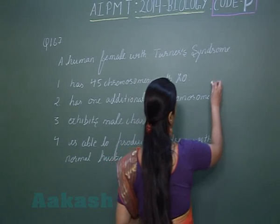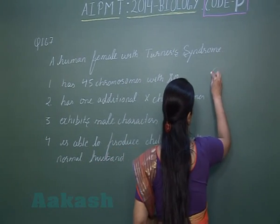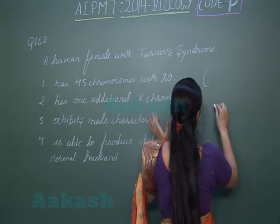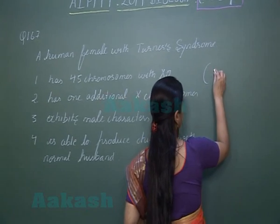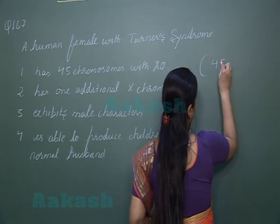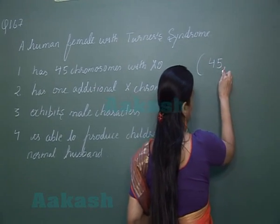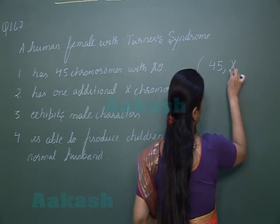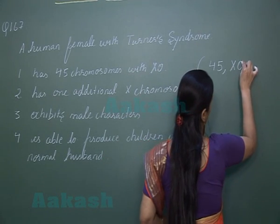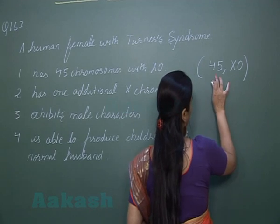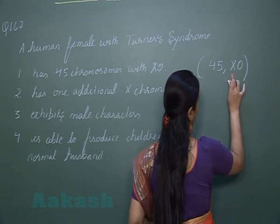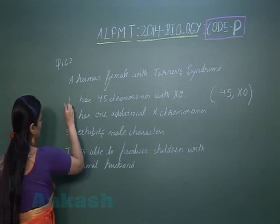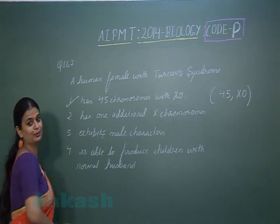The chromosome complement of a Turner syndrome female is written as 45,X0 — instead of 46 chromosomes, now 45, and out of the 2 X chromosomes, one X chromosome is lost. So the correct option for this question is option number 1.